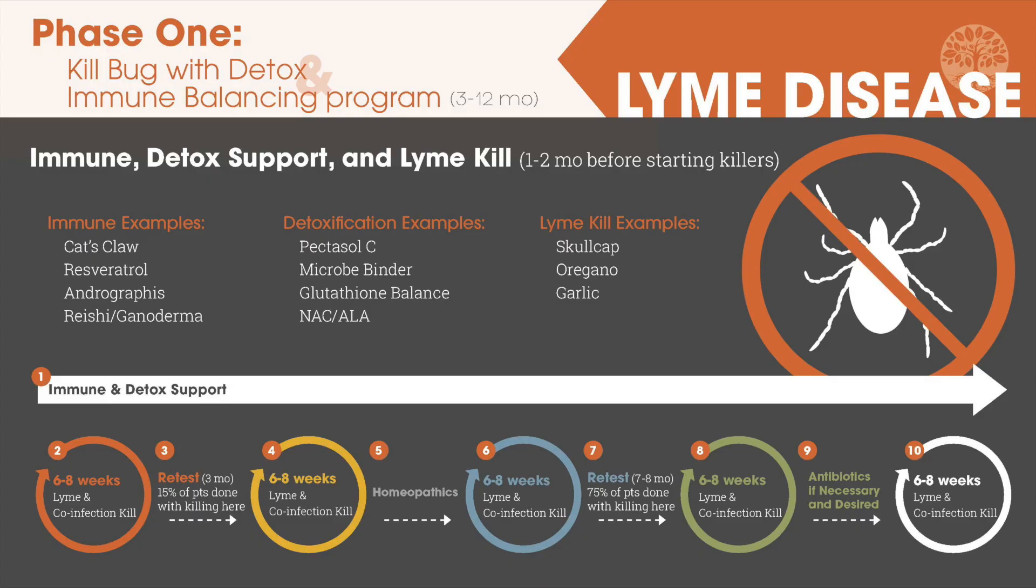Doing an antibiotic-only approach or a killer-only approach is really hard on your system, makes a lot of assumptions that may not be true, and can be the way to do it with the most possible side effects and just the most difficult way to do it. So in our program we always have some immune help in—for example resveratrol, for example cat's claw, for example reishi or ganoderma—all help balancing the immune system. Once again, that's not an exhaustive list, it's just some examples.